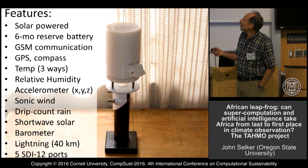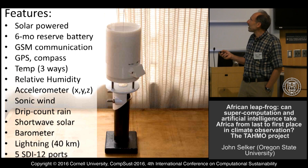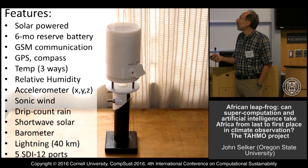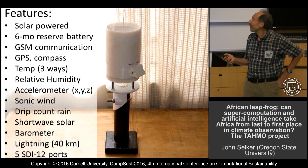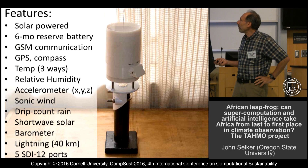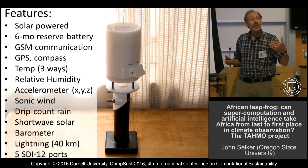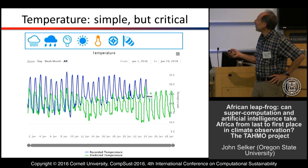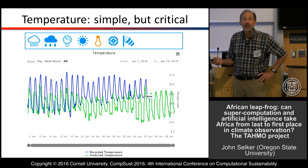Our weather station is solar-powered with a small solar panel and a six-month reserve battery. It uses cell phone communication and has a GPS compass, three ways to measure temperature, relative humidity, a sonic anemometer — no moving parts. It uses drip counting, forming a drip off the bottom of the rain gauge counted between two gold electrodes instead of moving parts. It also measures shortwave solar, barometric pressure, and lightning, since large storms cause significant damage. Current observations show temperature predictions from the best international models are off by about 10 degrees — what I call the 'extrapolate from Cairo effect.'